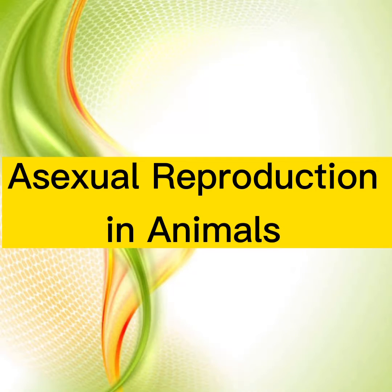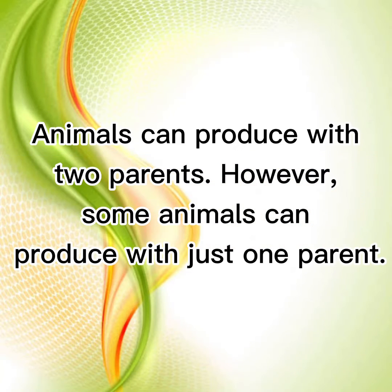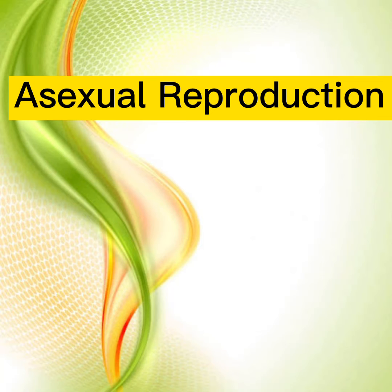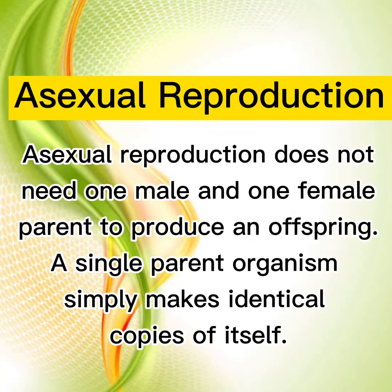Animals can reproduce with two parents. However, some animals can reproduce with just one parent. Asexual reproduction does not need one male and one female parent to produce an offspring. A single parent organism simply makes identical copies of itself.